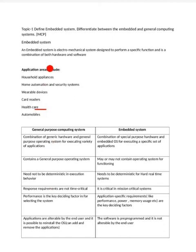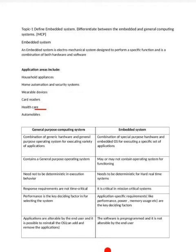When they ask you about applications, you have to give examples for each one. For household appliances you can give DVD and TV examples. For home automation and security systems you can give automatic AC and intrusion detection systems. For wearable devices you can give smart bands.